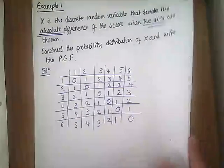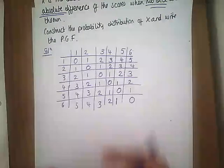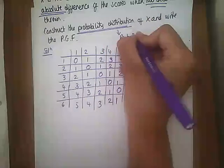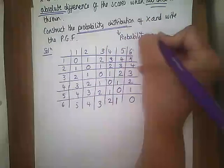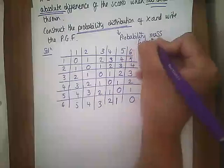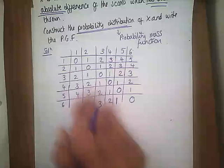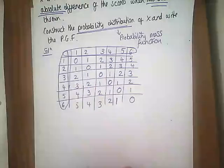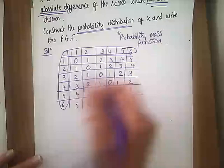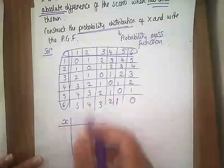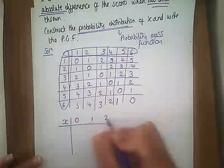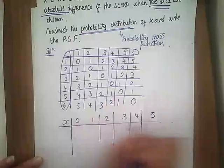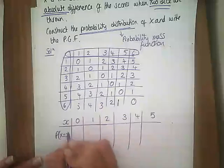Those are our possible outcomes. Now I need to put this into a probability distribution — that is the same as writing down the probability mass function, putting it into a table. Our absolute differences can be 0, 1, 2, 3, 4, or 5.